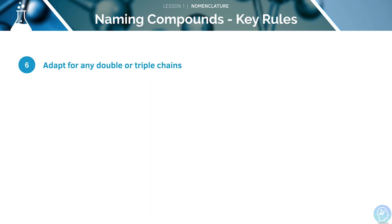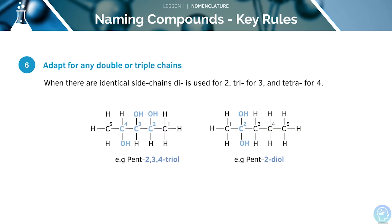If you've got any double or triple chains in the compound, you'll need to adapt for these. If there are identical side chains, you can use di for two, tri for three, and tetra for four. Here, we can see where there are three identical side chains, we have a tri. Where there are two, we have a di.